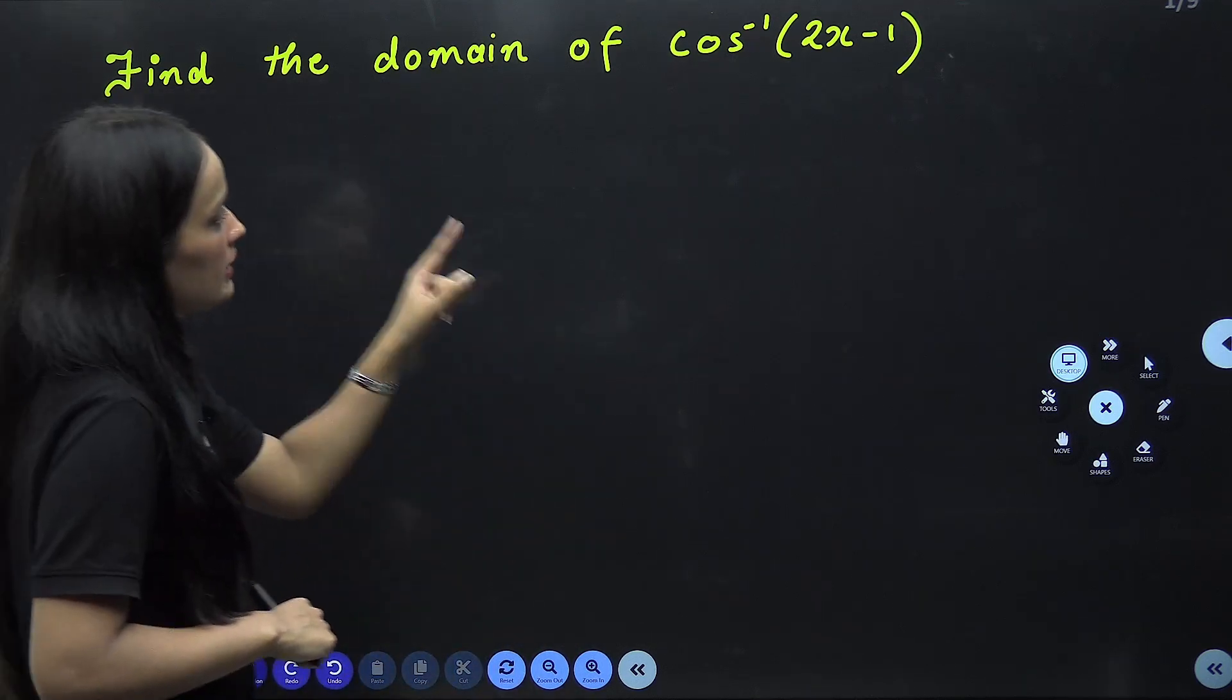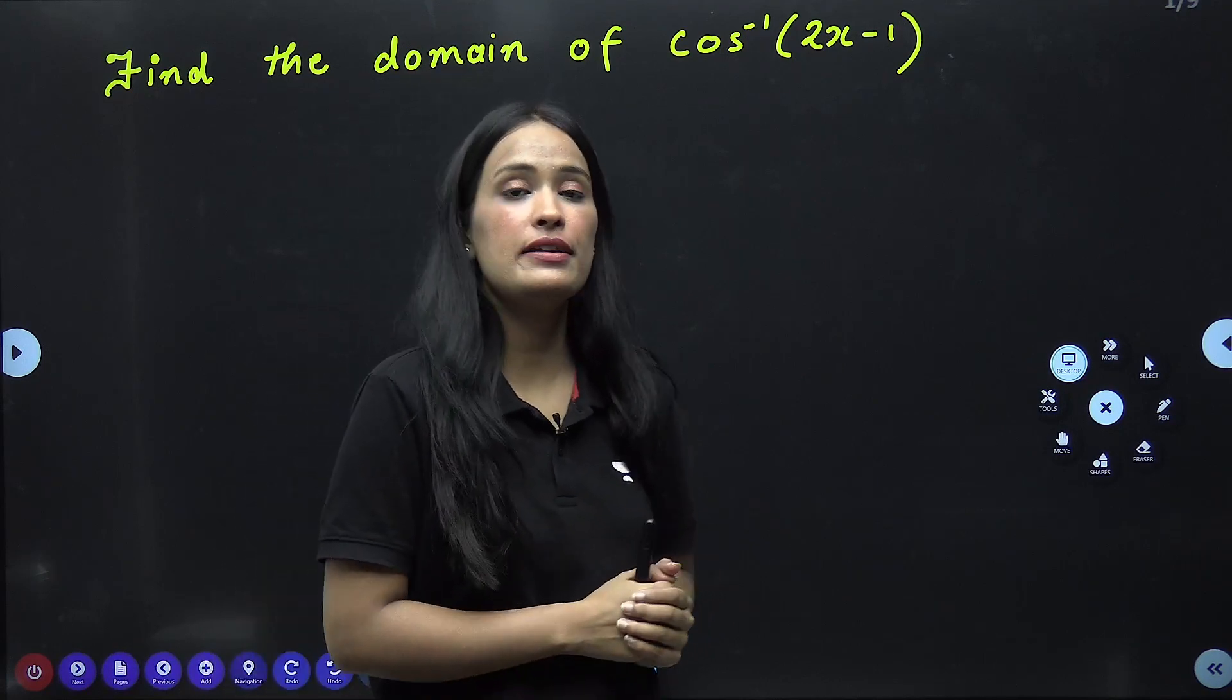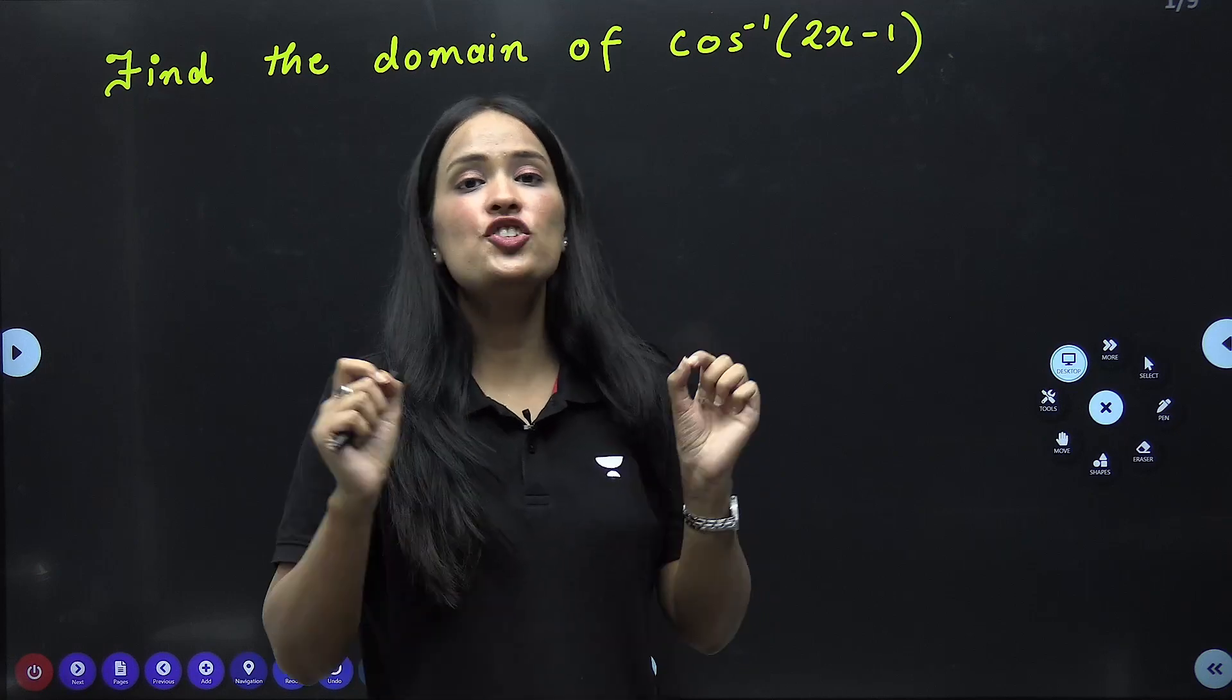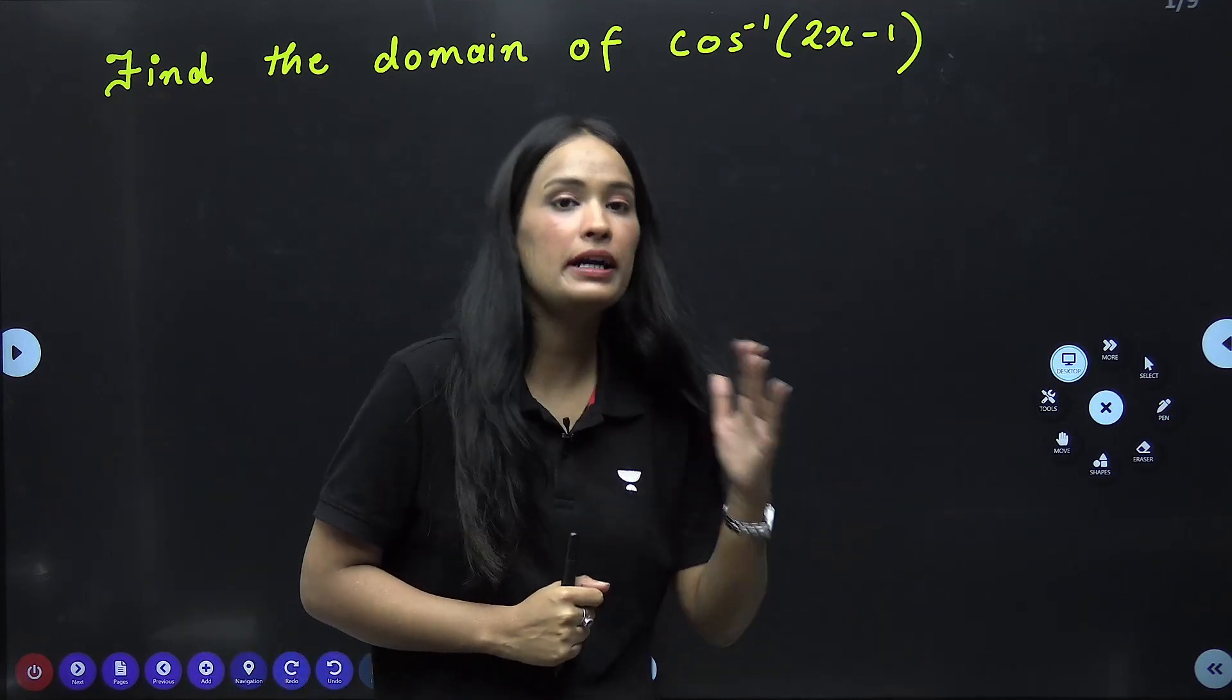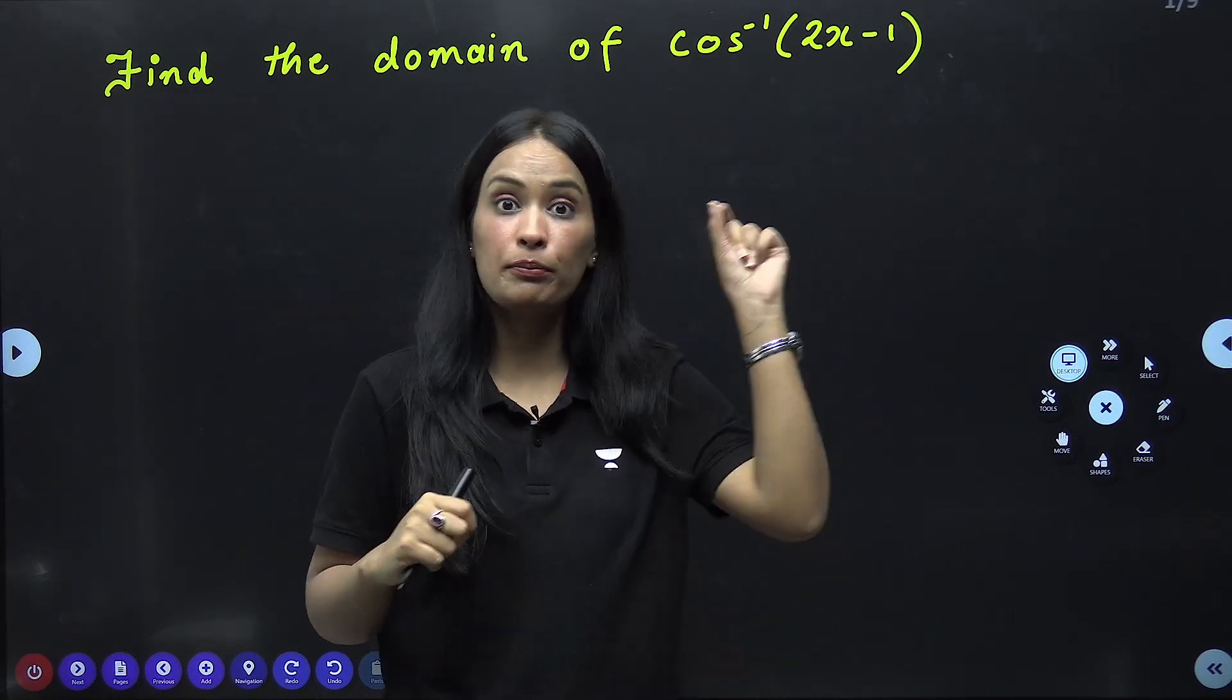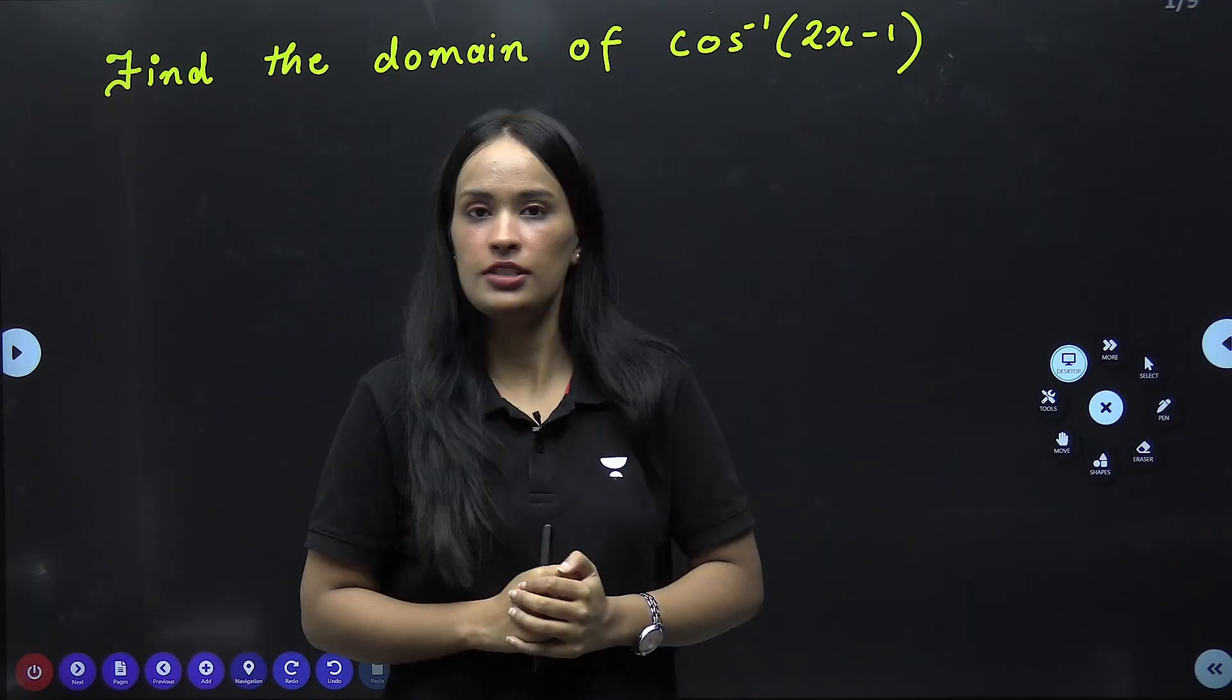In this question, we need to find the domain of cos inverse 2x-1. Once again, for the six inverse trigonometric functions that we have read in chapter 2, do you remember all the domains? If you remember, you will write six of the ITF. Okay?